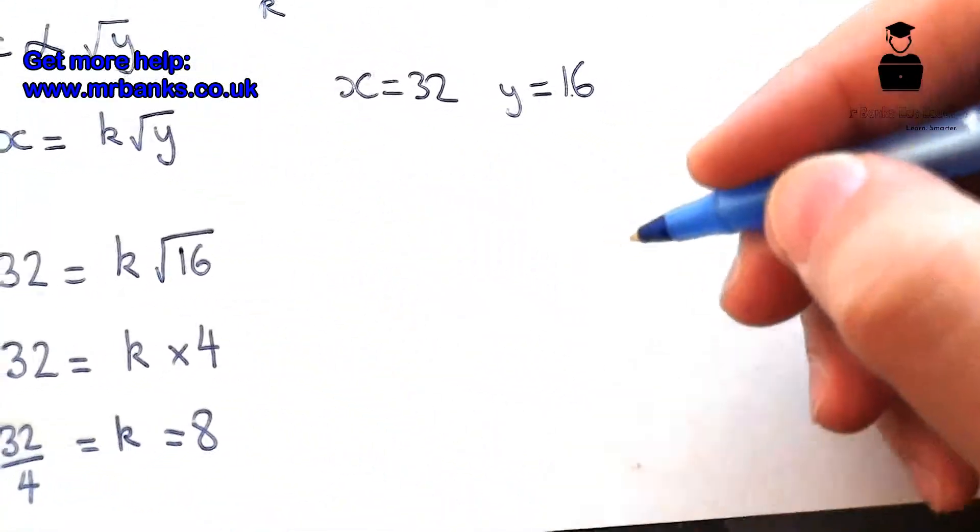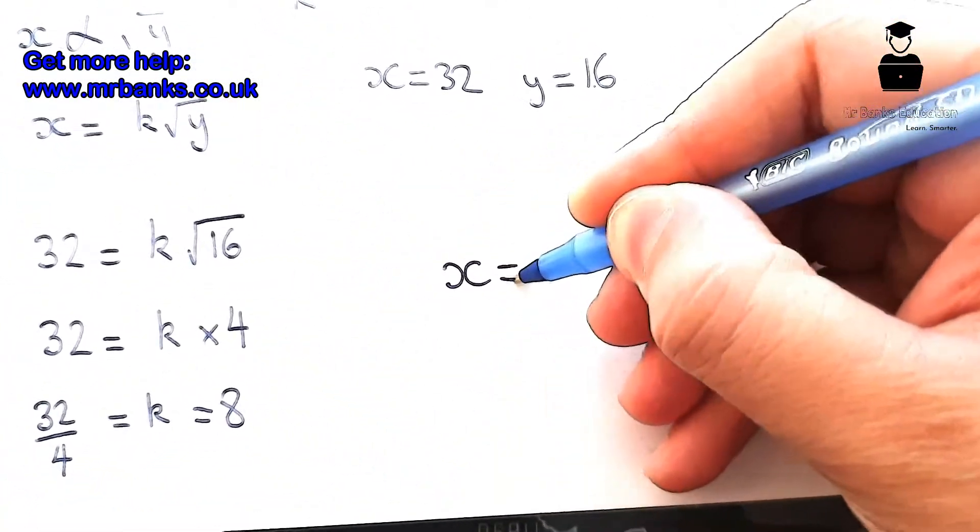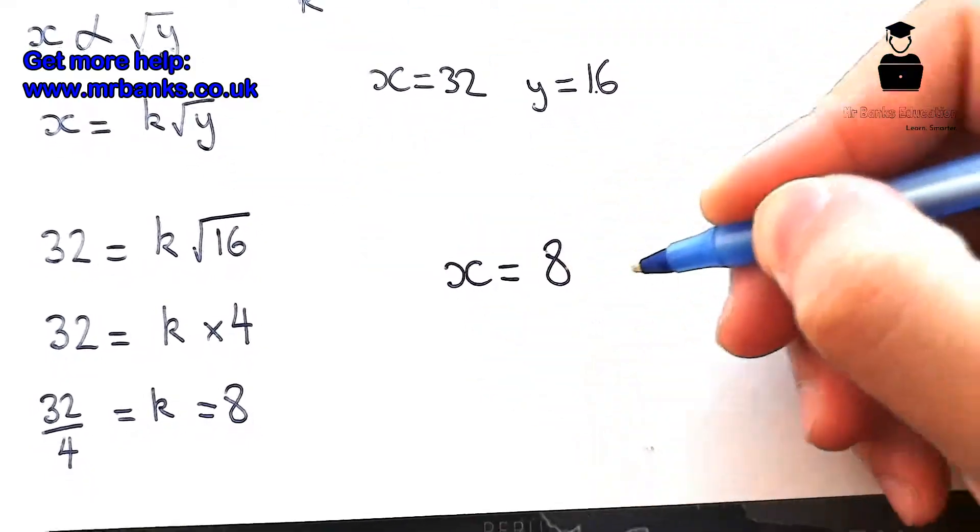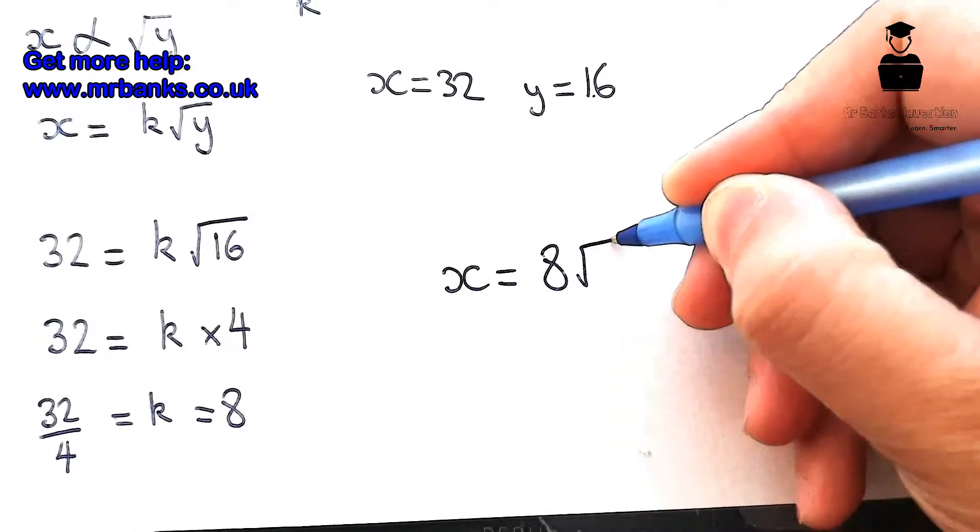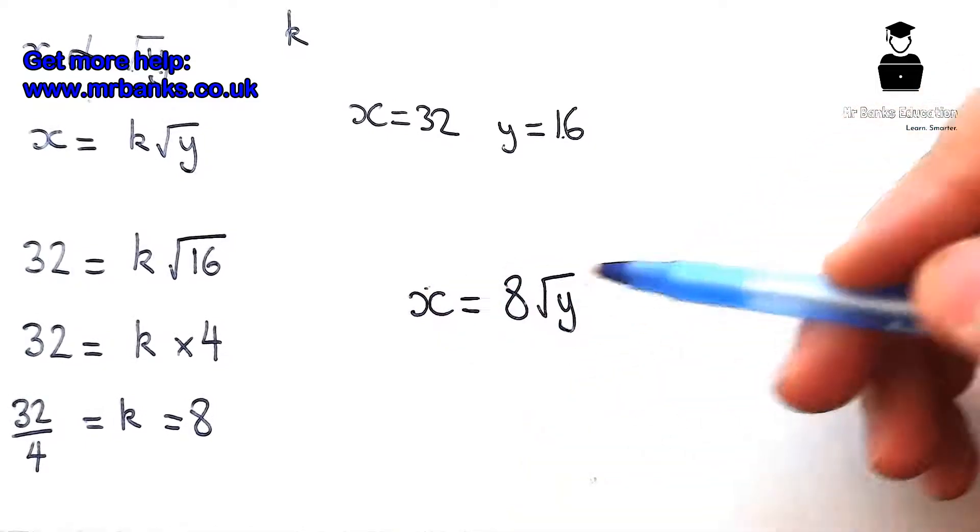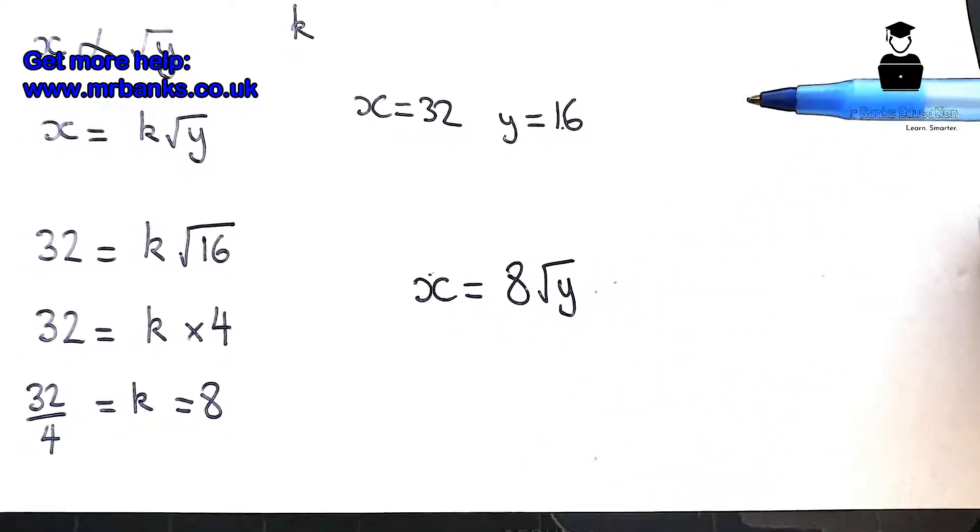So the answer is X equals k, which is 8, it's a constant so it's always going to be 8, which you've just found out, times root Y. And that's actually the answer to the question. That is X expressed in terms of Y.